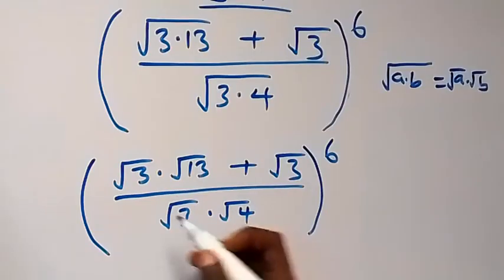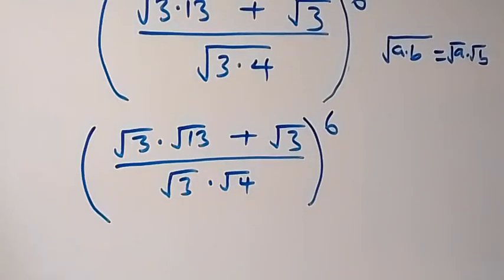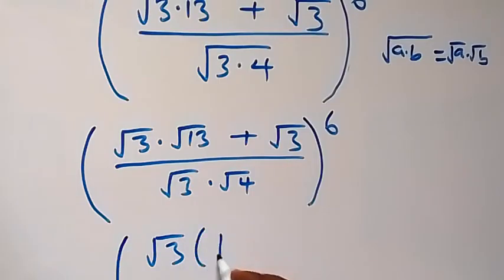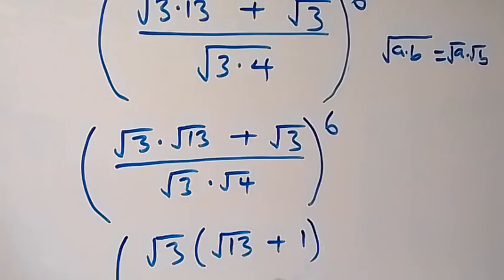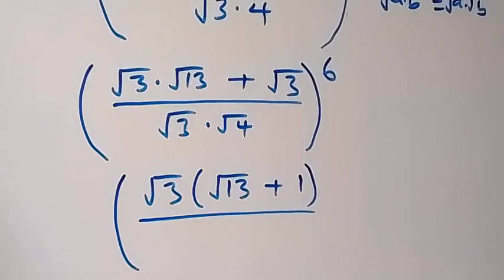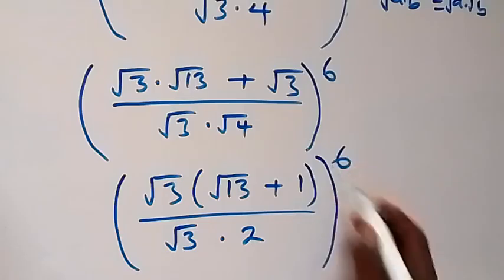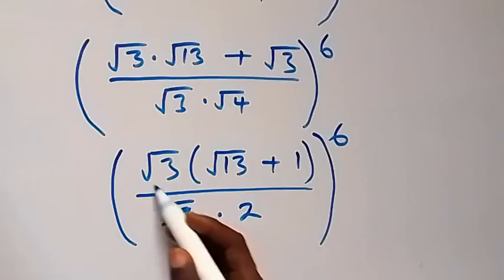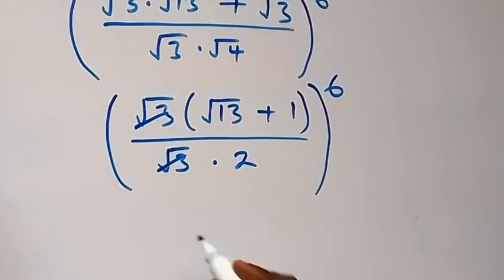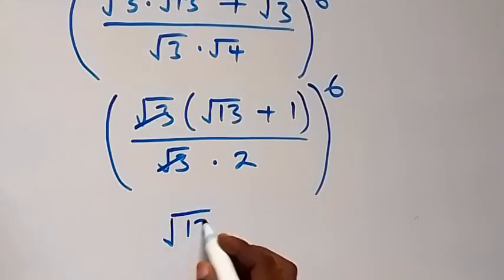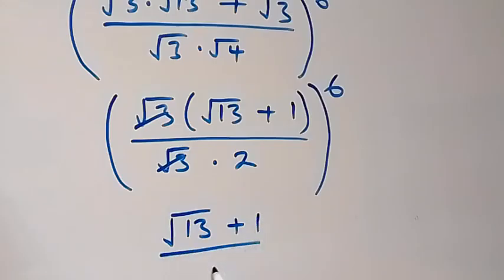From here we have root 3 common, we can factor that out. This becomes bracket root 3, then in bracket what is left: root 13, then plus what is left here which is 1, over root 3 times root 4, which is 2, close bracket, raise to power 6. The root 3 cancels, so we are left with (root 13 plus 1) all over 2, raised to power 6.